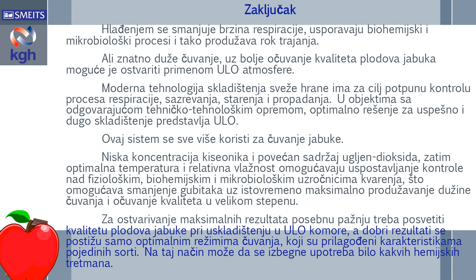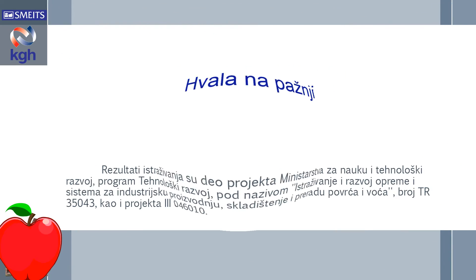Za ostvarivanje maksimalnih rezultata, posebnu pažnju treba posvetiti kvalitetu plodova jabuke pre skladištenja — početni kvalitet je jako važan. Dobre rezultate se postižu samo optimalnim režimima čuvanja, koji su prilagođeni karakteristikama pojedinih sorti. Na taj način može da se izbegne upotreba bilo kakvih hemijskih tretmana, što je sada jako važan trend u prehrambenoj industriji.